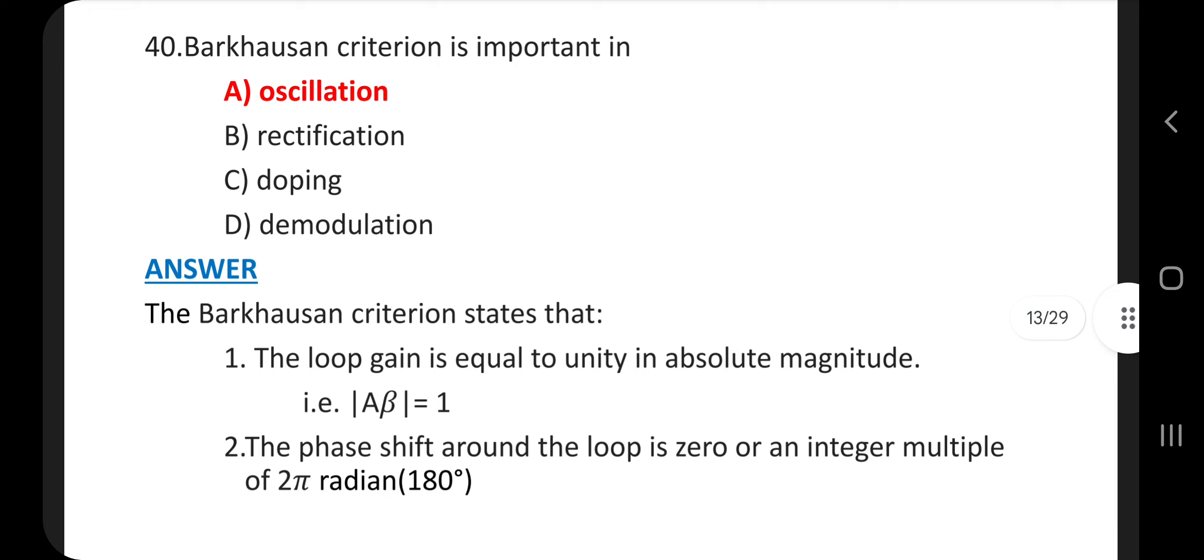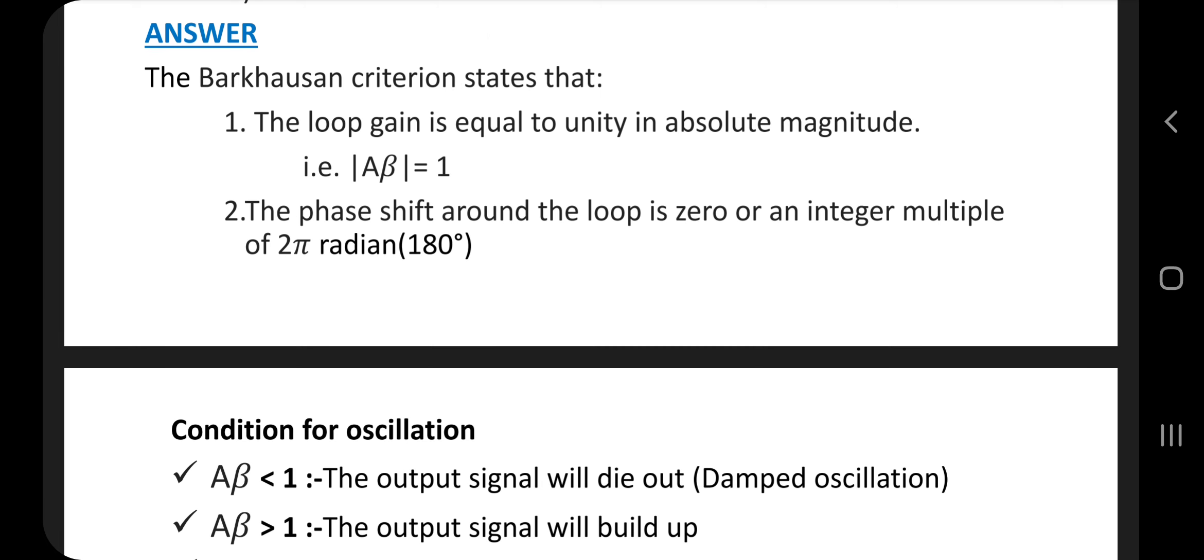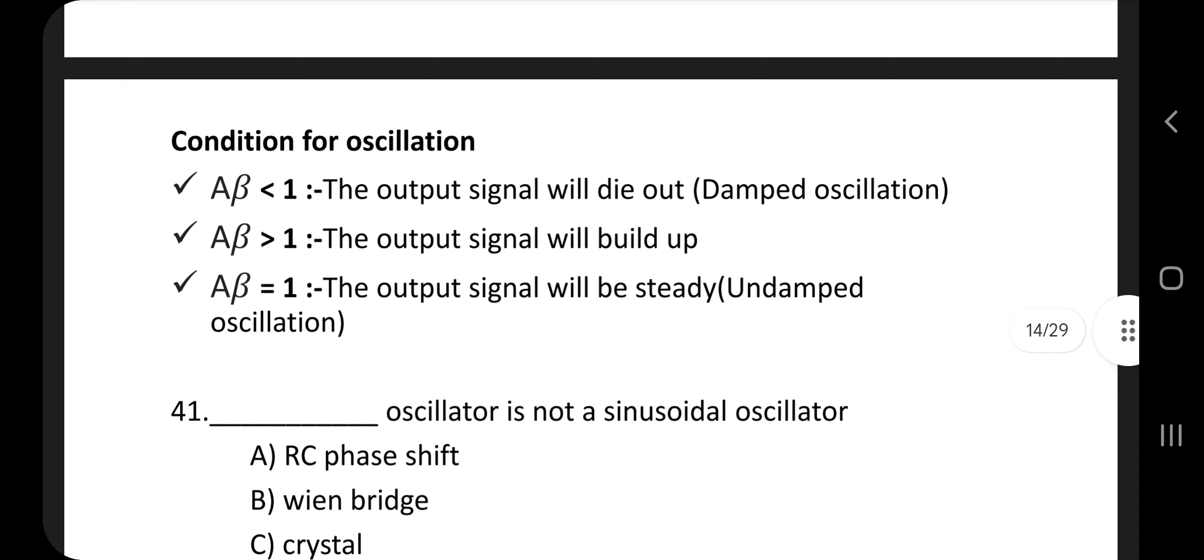Question number 40. Barkhausen criterion is important in answer is option A, oscillation. The Barkhausen criterion states that the loop gain is equal to unity in absolute magnitude, that is modulus of A beta is 1. The phase shift around the loop is 0 or an integer multiple of 2 pi radian, that is 180 degree. Condition for oscillation: A beta less than 1, the output will die out, that is damped oscillation.